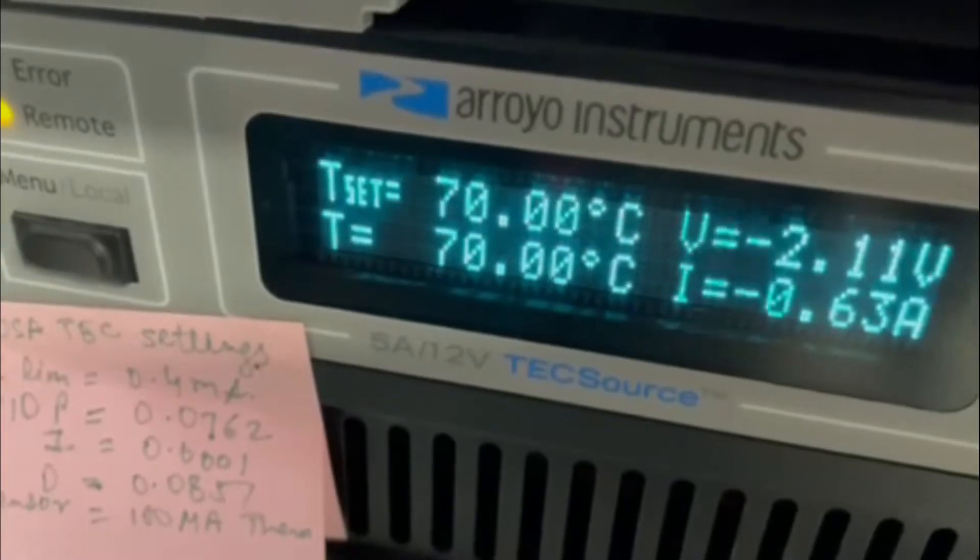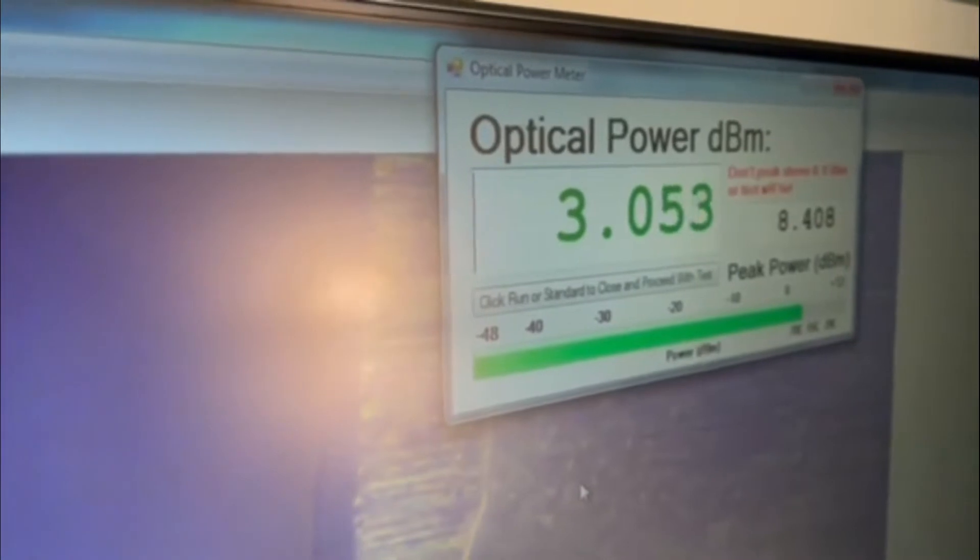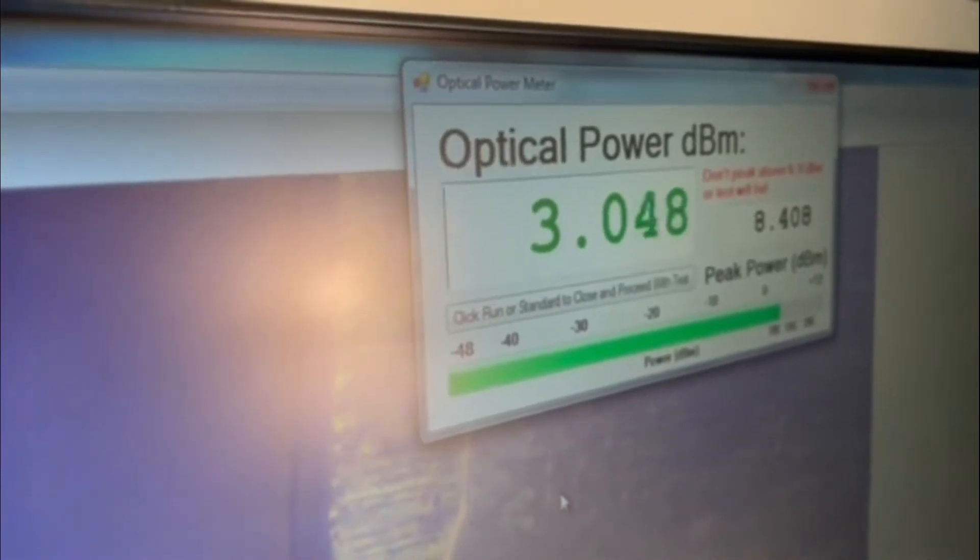Repeating the test at 70 degrees C, we've increased the laser bias from 100 to 120 milliamps, adjusted the EA bias, and the average power in the single-mode fiber has dropped from about 4.5 dBm to about 3 dBm owing to the increase in temperature.